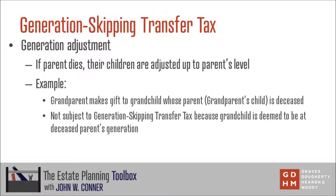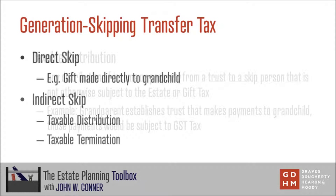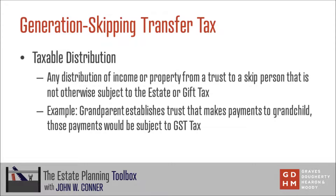There are three general types of transfers that the generation-skipping transfer tax applies to. The first is a direct skip — that is the most straightforward. That is simply when an individual makes a gift to someone who is a skip person, i.e., someone that is more than one generation below their own and or more than 37 and a half years younger than them. The other transfers are indirect skips, and there are actually two of those: the taxable distribution and the taxable termination. The taxable distribution is any distribution of income or property from a trust to a skip person that is not otherwise subject to the estate or gift tax.